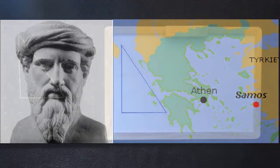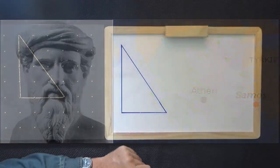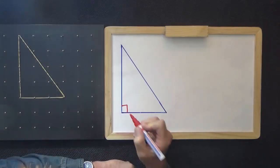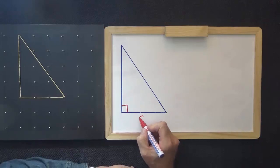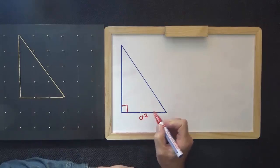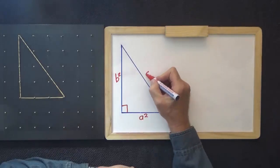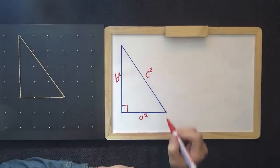He and his followers were able to work out that in a right-angle triangle, this side squared plus this side squared equals this side squared.